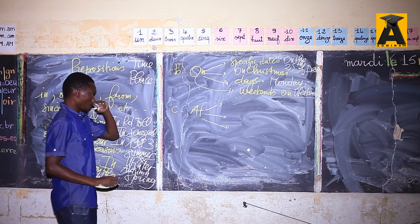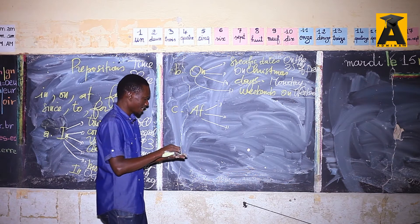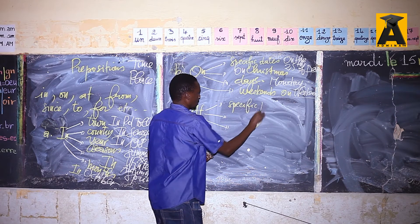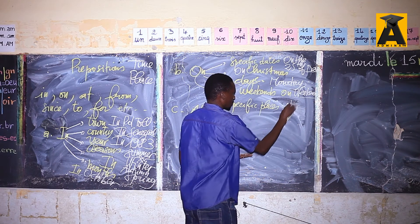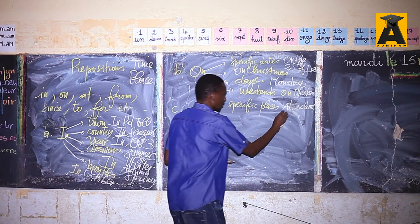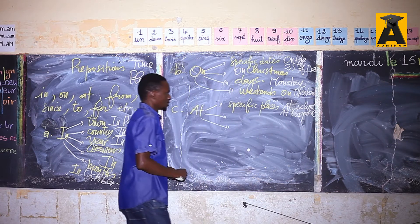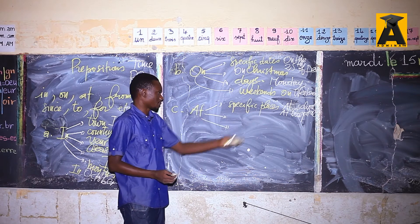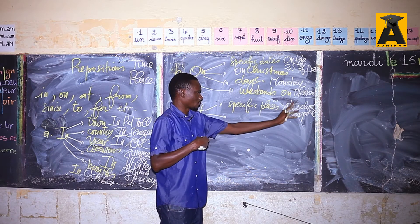'At' can go with specific places. For example, you say 'I go to school', but if you're already there, you say 'I am at school'. You can say 'I am at the hospital', or 'I work at the American School'. So 'at' is used with specific places. Notice: you say 'I go to school' but 'I am at school'.